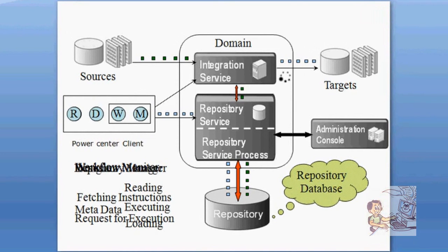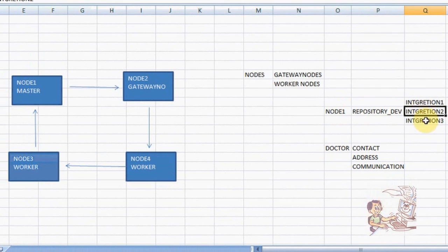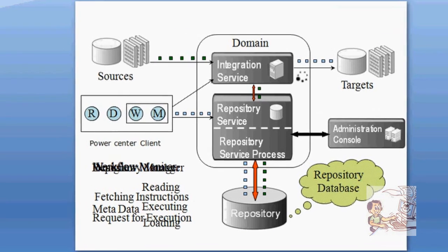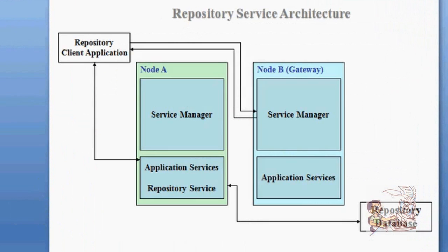On Node 1, we created one repository. This repository contains multiple integration services — I1, I2, I3 — which we can use. This is the architecture of application services: core services and application services. Each and every node contains its own core services and application services. From here, we can start the client part.